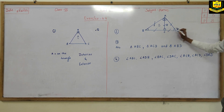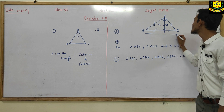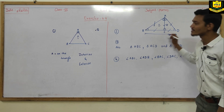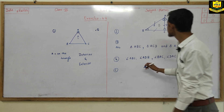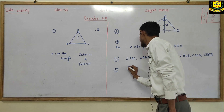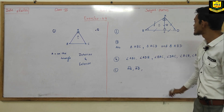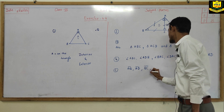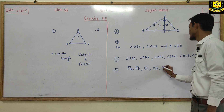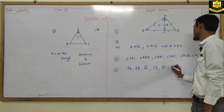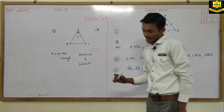Now for the six line segments in this figure. The 5th part asks us to find the line segments. BD is our 6th line segment. So let us write the answers: 1st is AB, 2nd is AD, 3rd is BC, 4th is CD, 5th is AC, and 6th is BD. These are the 6 line segments formed in this figure.